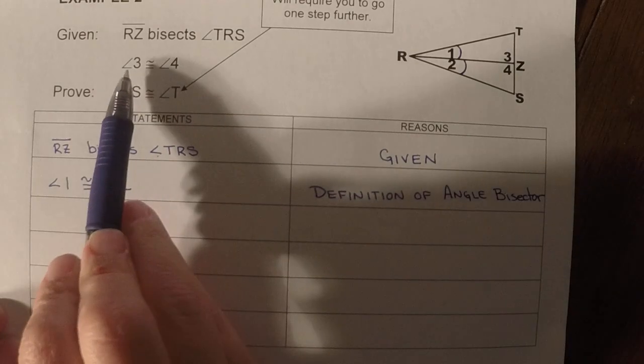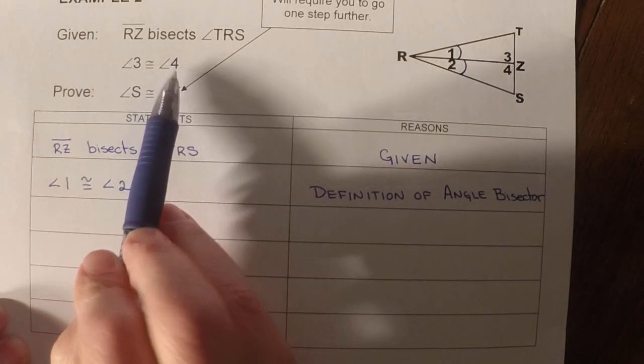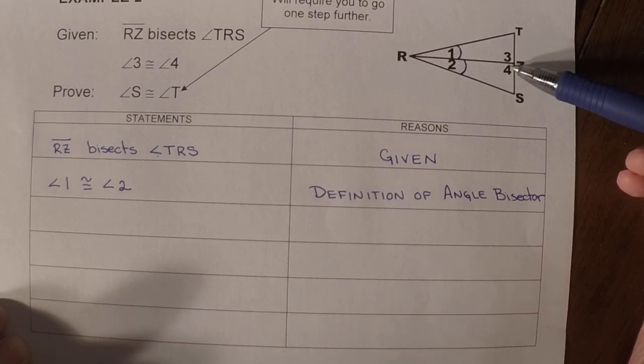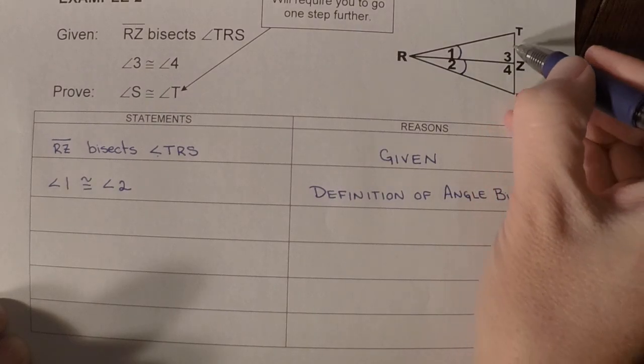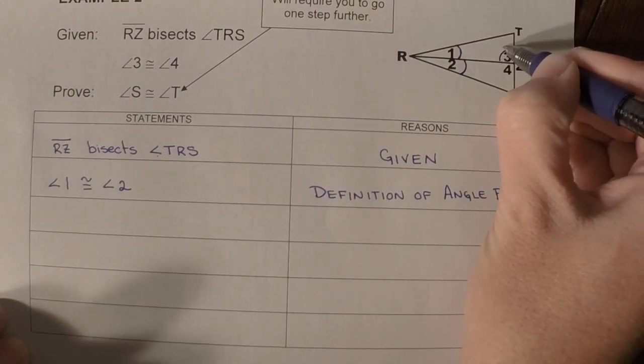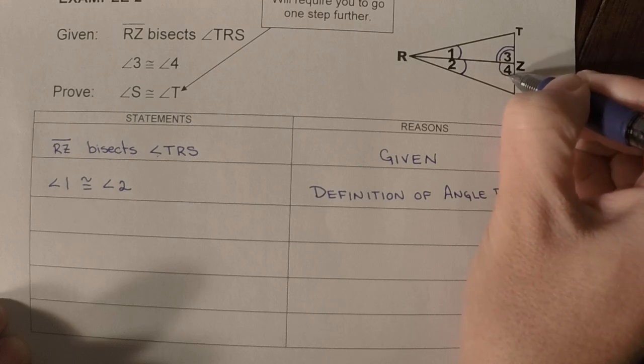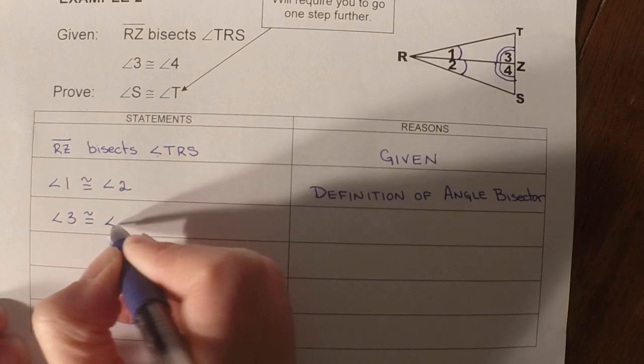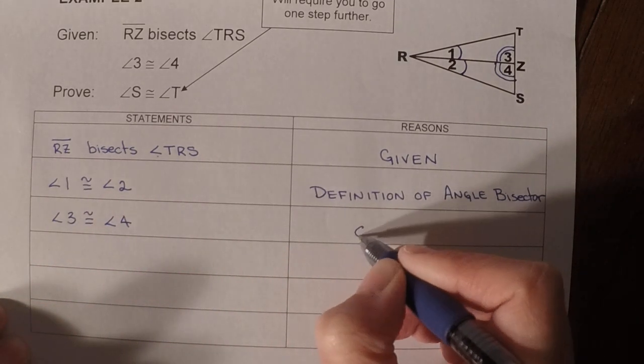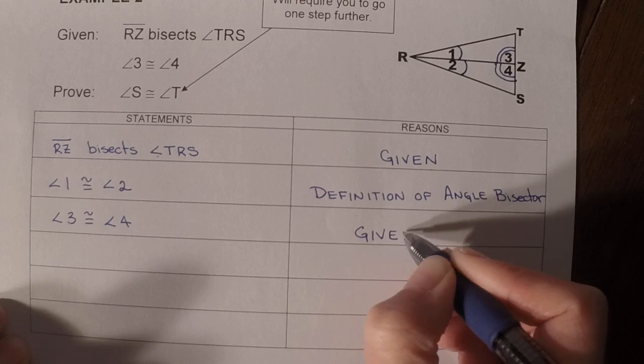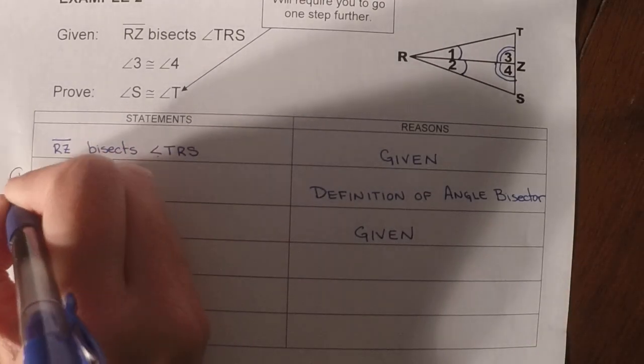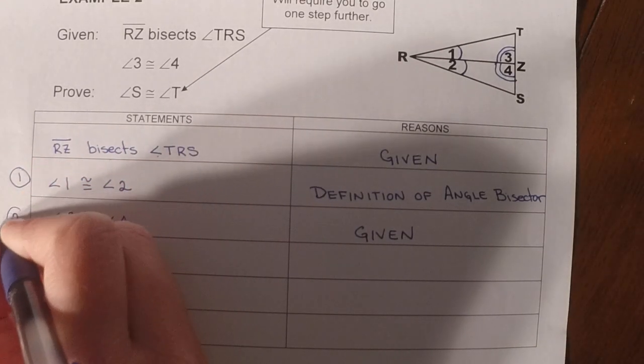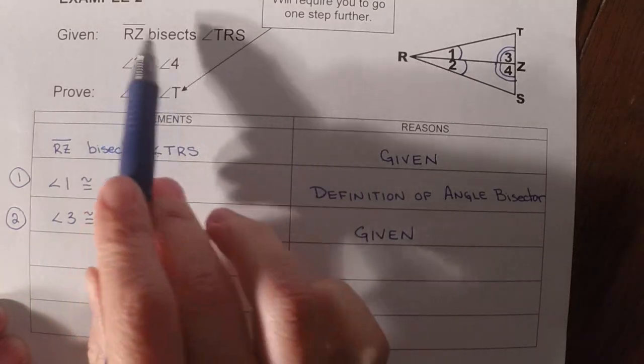Then it says angle three is congruent to angle four. Now, I know they look like 90 degrees, but we can't assume. So we're just going to mark angle three congruent to angle four, and we write it down, and this would just be given. So, so far we have one congruency, two congruencies, but we're out of givens.